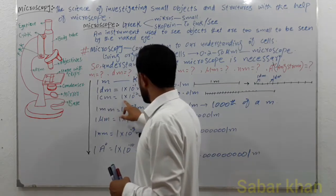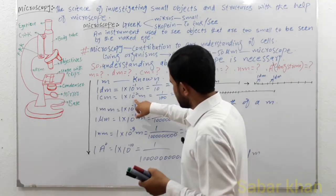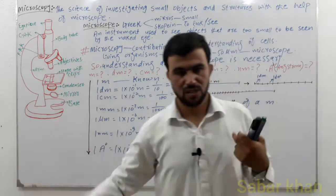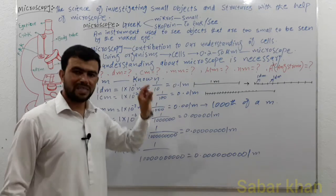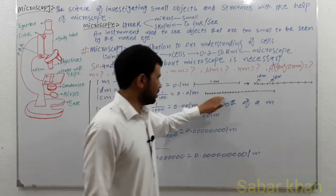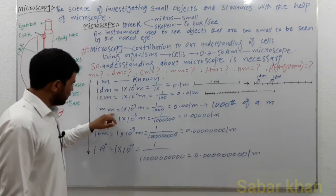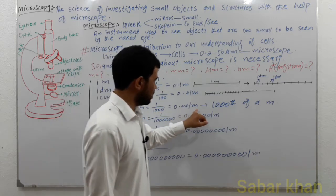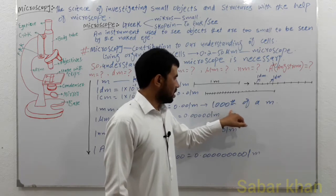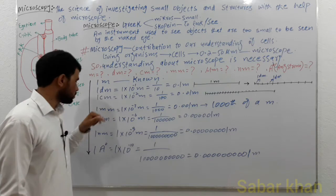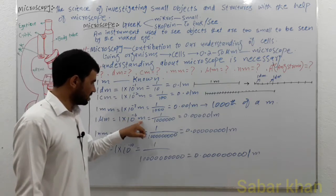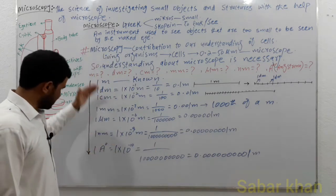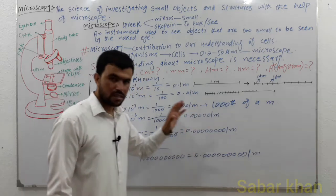One centimeter is equal to 1×10⁻² meter, which equals 1 divided by 100, equal to 0.01 meter. When we take 1 meter and divide it by 100, each section is called 1 centimeter. One millimeter is equal to 1×10⁻³ meter, so 1 divided by 1000 equals 0.001 meter. One micrometer equals 1×10⁻⁶ meter. One nanometer is less than that, and one angstrom is even smaller.